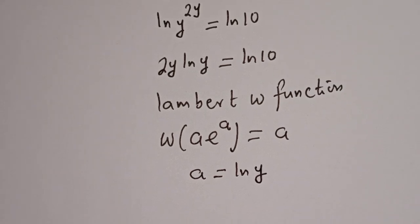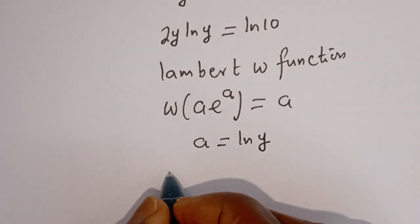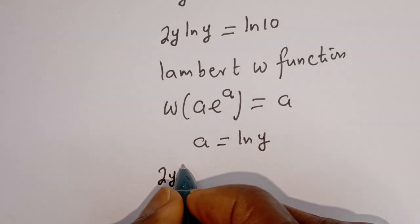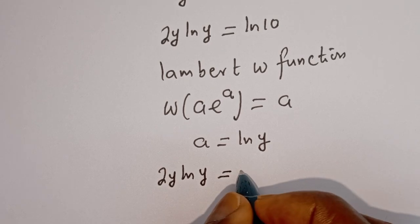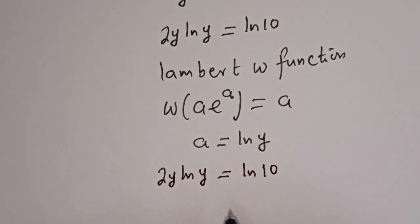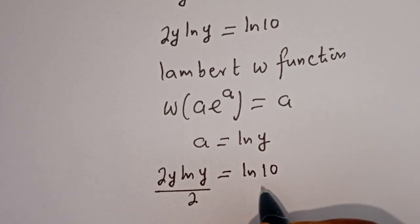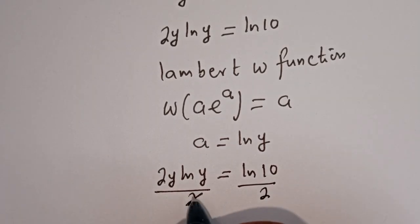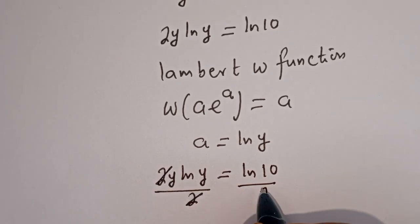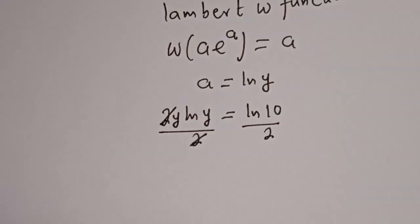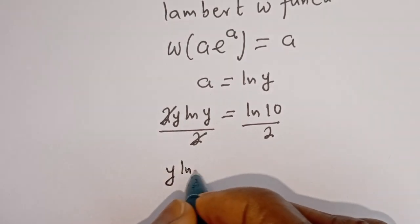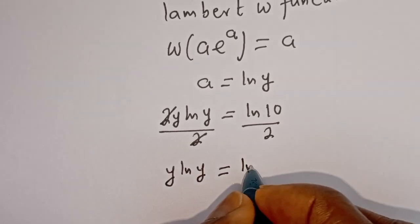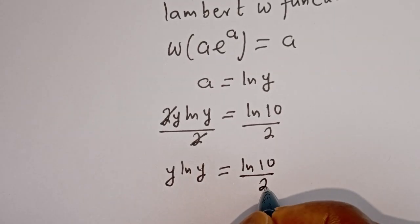Now let's substitute. We have 2Y·ln(Y) is equal to ln(10). We can divide both sides by 2, and we get Y·ln(Y) is equal to ln(10) over 2.